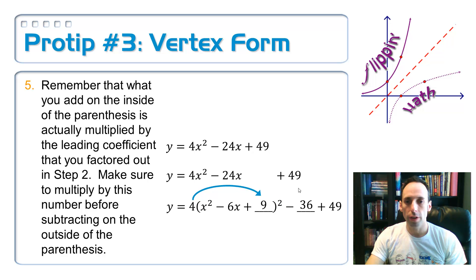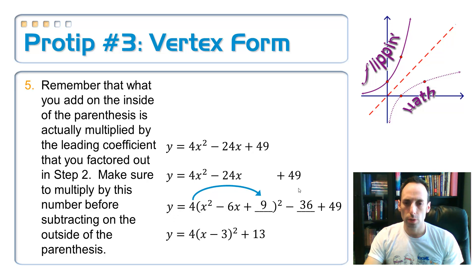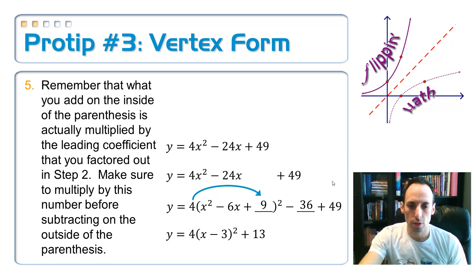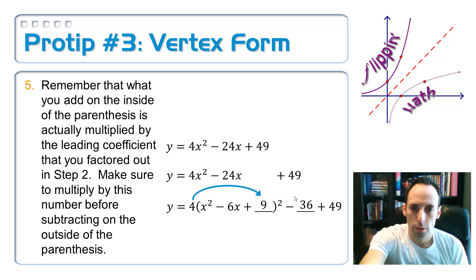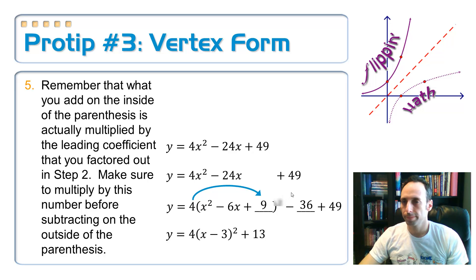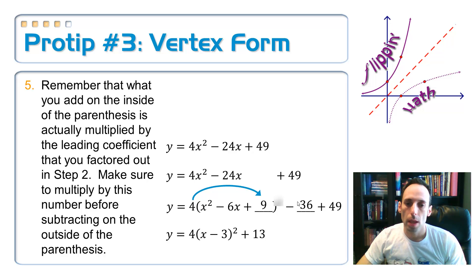All right, so then finally, just clean this thing up and complete the square there. Write it as in factored form. So y equals 4 times x minus 3 squared, now the squared makes sense. I have to get rid of this one too. Okay, there we go. Anyway, so y equals 4 times x minus 3 squared plus 13, and the vertex is very easy to spot: 3, 13.